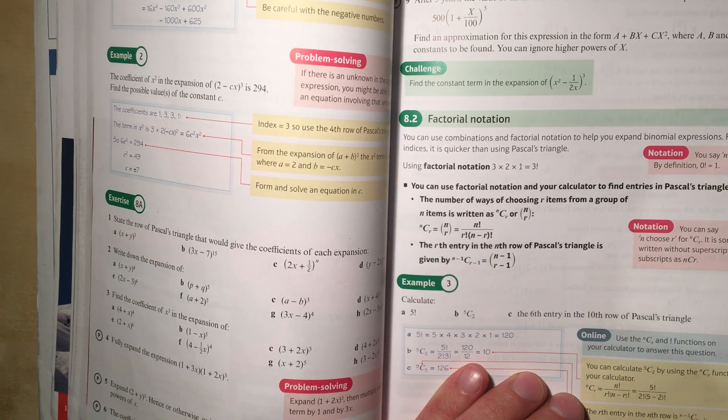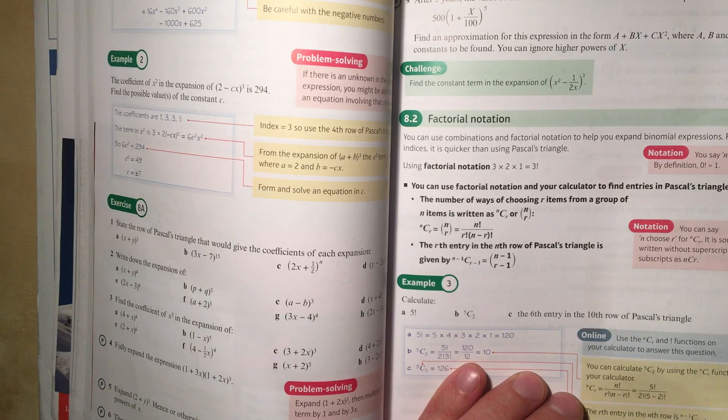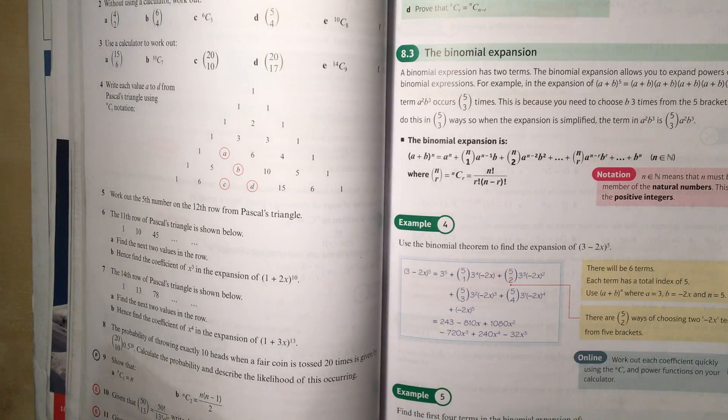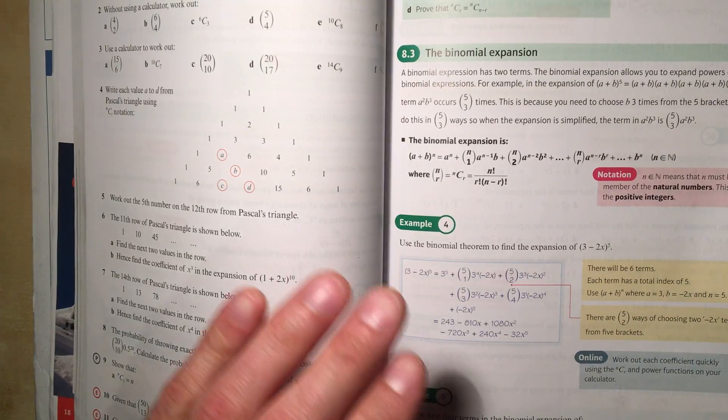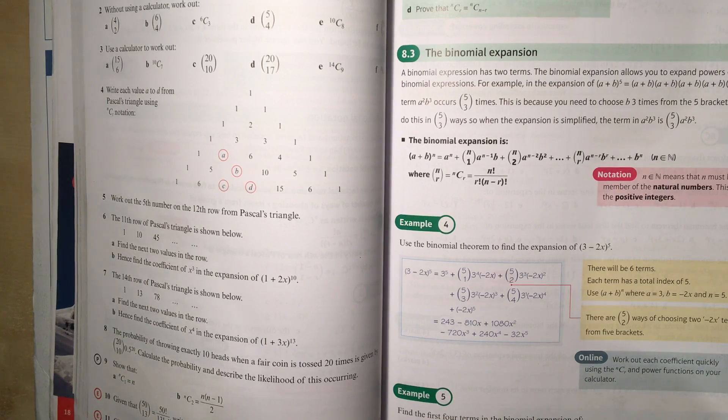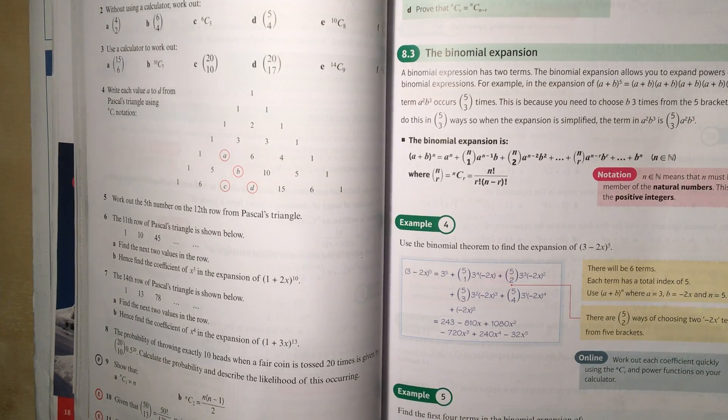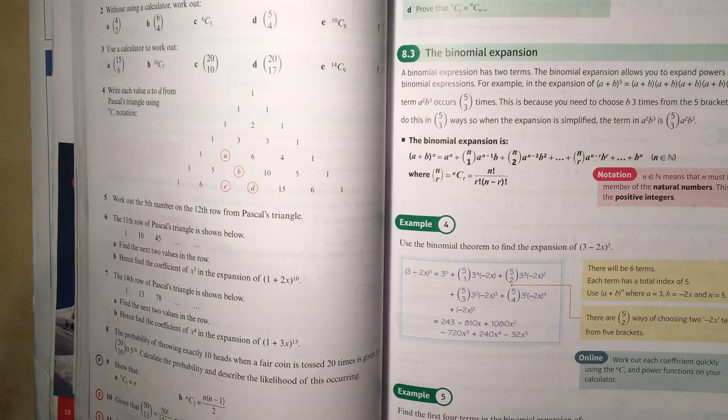As it happens, these numbers are the same numbers in Pascal's triangle. That's why in the first half of this exercise, we could use Pascal's triangle to help us. Have a look at exercise 8b. Get used to the way the notation works. And then we'll look at section 8.3 in the next video.